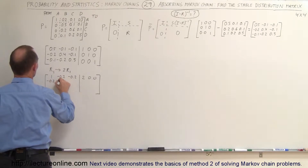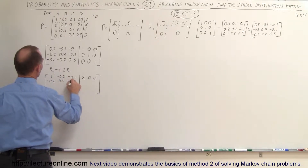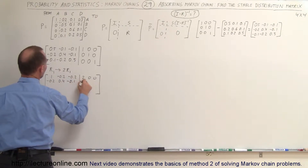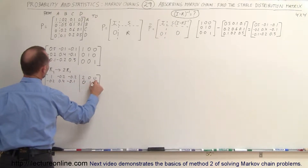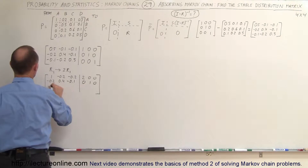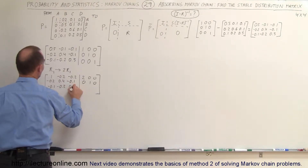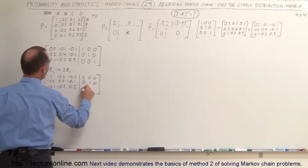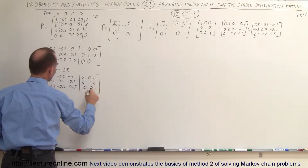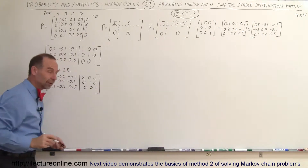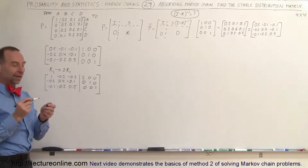Everything else stays the same. Row 2 remains: minus 0.2, 0.4, minus 0.1, 0, 1, 0. Row 3 remains: minus 0.1, minus 0.1, minus 0.2, 0.5, 0, 0, 1. We're part way there — we have a 1 in the first pivot position.